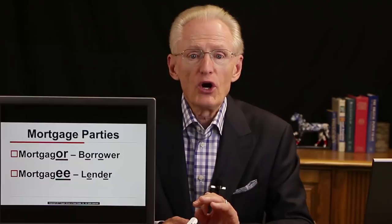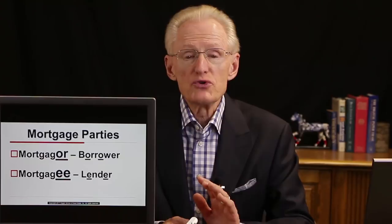If that's hard to remember, the OR in mortgagor and the two O's in borrower might help, or the two E's in mortgagee and the two E's in lender. Make sure when you read a question dealing with mortgagor and mortgagee that you have them straight. The mortgagor gives the mortgage — the mortgagor is the borrower giving the mortgage to the bank. The mortgagee, the bank, receives the mortgage as collateral.